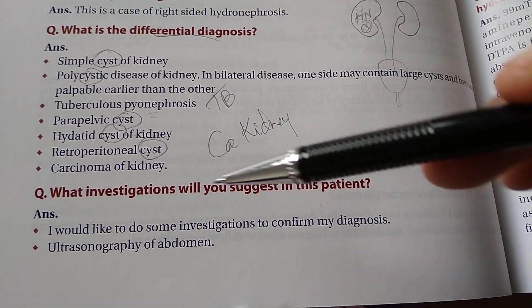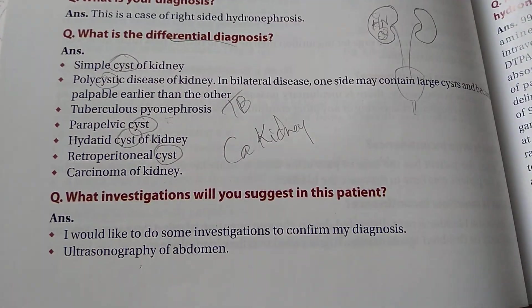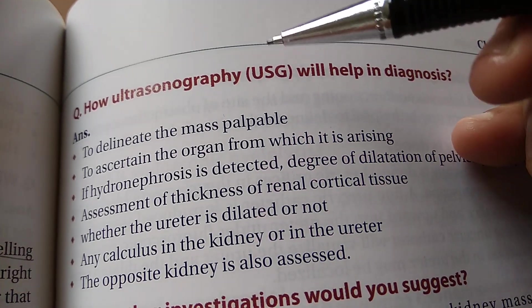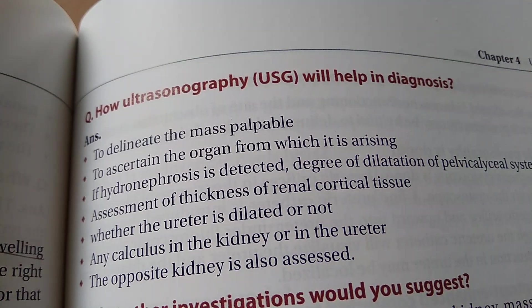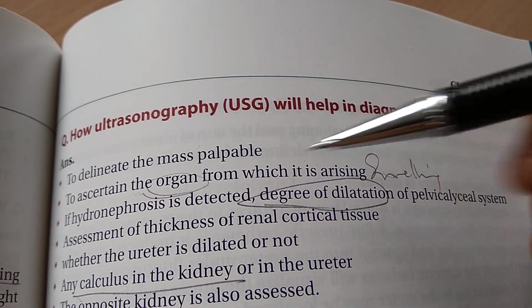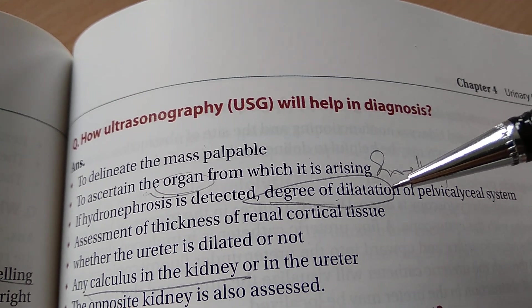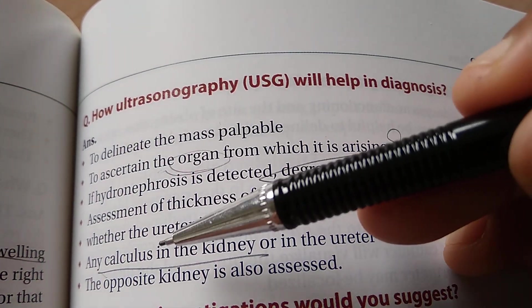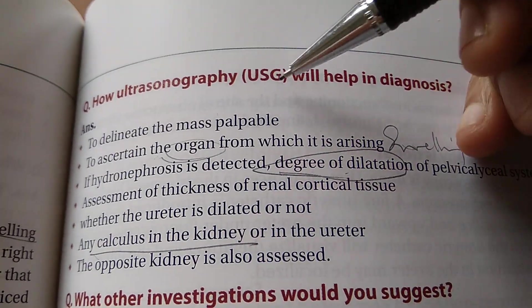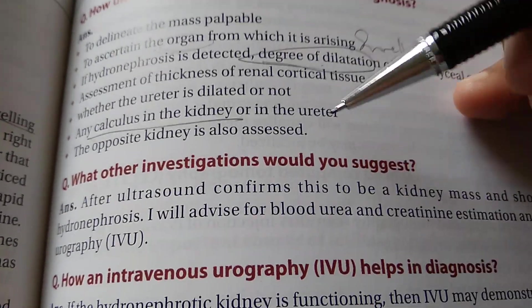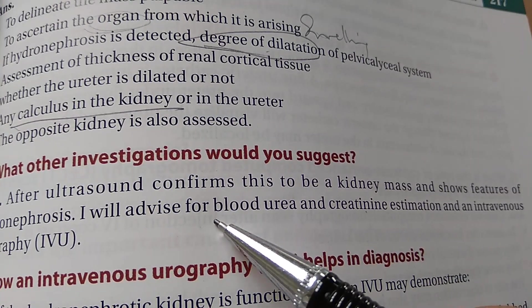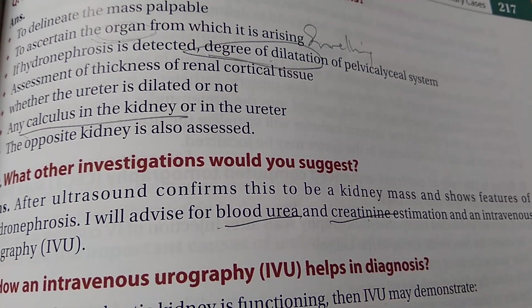What investigations will you suggest in this patient? Ultrasound abdomen — this will tell you whether the swelling is from the kidney, the degree of dilatation of the pelvicalyceal system, whether there is any calculus, and allows examination of the opposite kidney as well. It uses non-ionizing radiation and is quite safe. After ultrasound, check renal function — blood urea and creatinine.